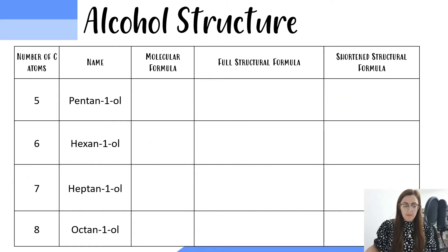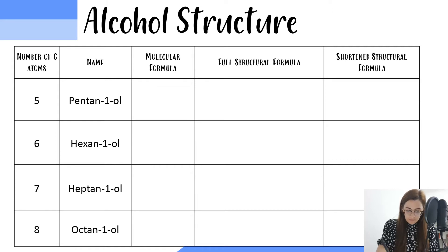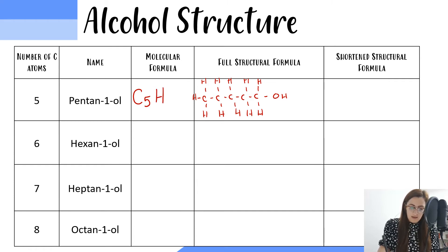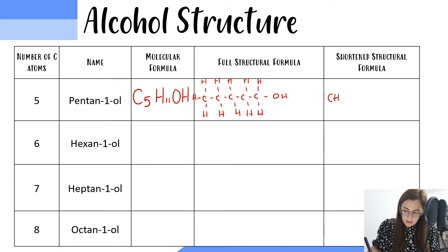Pentan-1-ol has five carbons with a hydroxyl group at the end. We make sure every carbon has four bonds by filling in the hydrogens. The molecular formula has five carbons, eleven hydrogens, and a hydroxyl group. The shortened structural formula: the first carbon has three hydrogens, the second has two, the third has two, the fourth has two, the fifth carbon has two hydrogens, and our OH at the end.